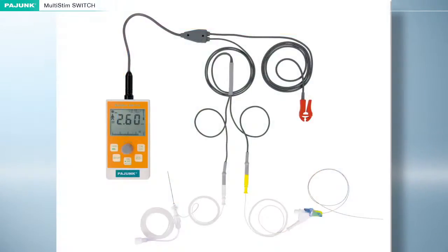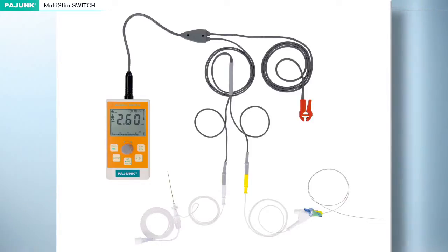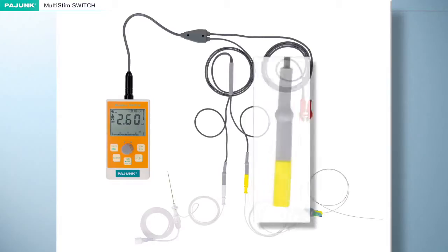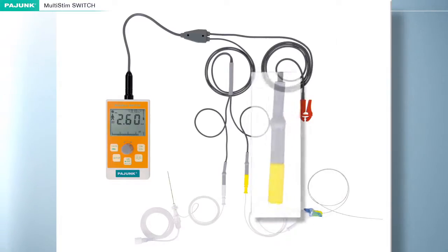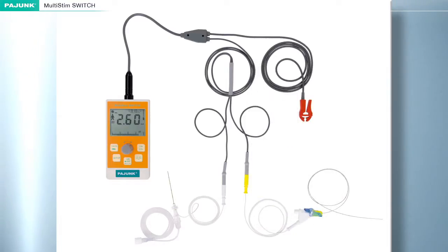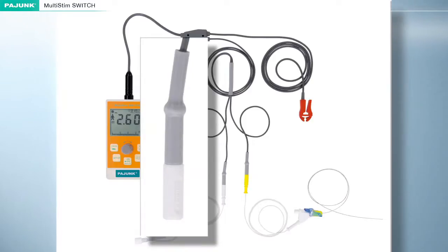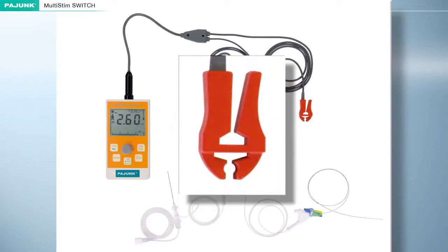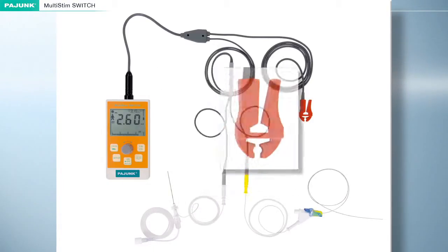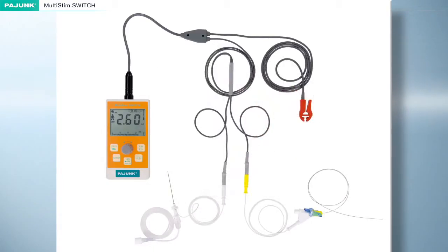The Multi-Stim Switch is simultaneously connected to the cannula and the catheter by a Y-patient cable. This cable has a yellow connector for the stimulating catheter, a white connector for the cannula, and a clamp for the adhesive electrode.